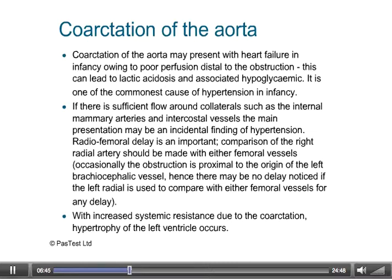If the obstruction is not critical, there will nonetheless be poor renal perfusion. In response, there will be increased secretion of aldosterone and angiotensin, meaning the child may present with hypertension in the upper part of the body, proximal to the obstruction. Indeed, in infancy, coarctation of the aorta is one of the commonest causes of hypertension. In order for the rest of the body to be perfused, blood will find its way beyond the obstruction by way of collaterals, including the internal mammary arteries and intercostal vessels. Long-standing obstruction will give rise to left ventricular hypertrophy.